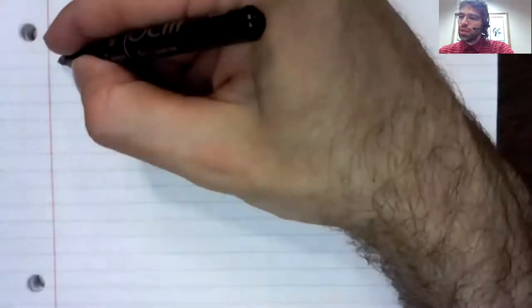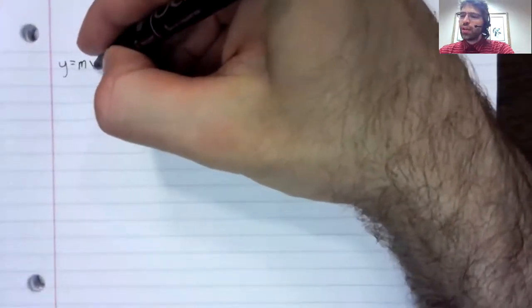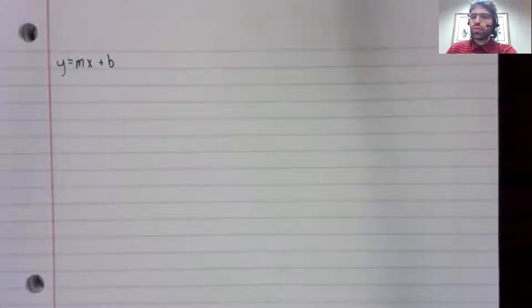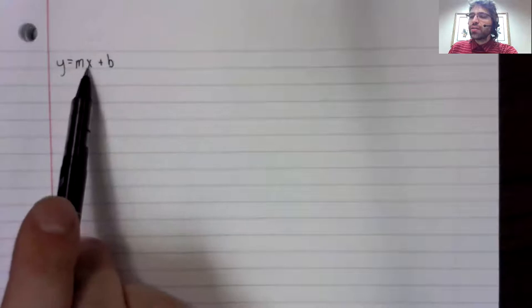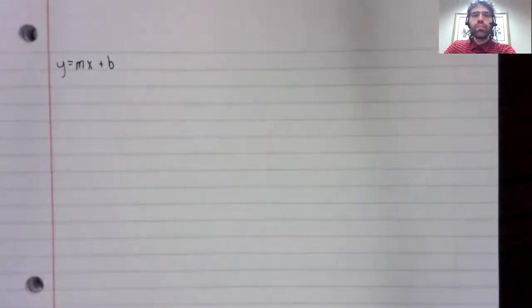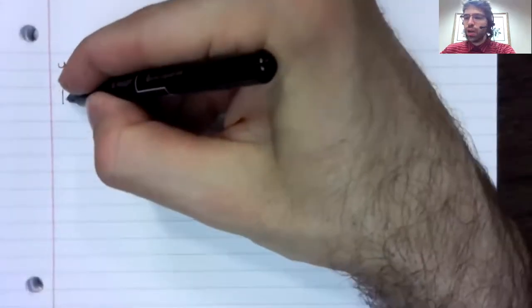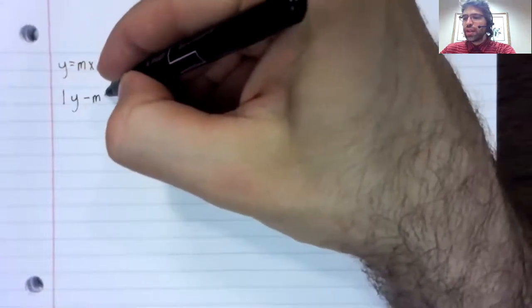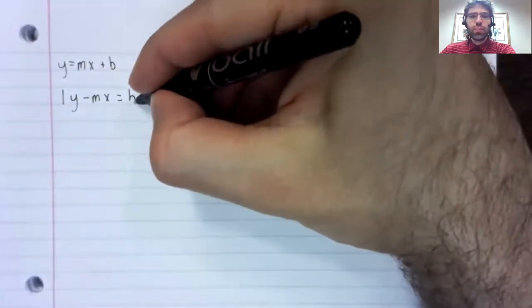You've certainly seen linear equations before in high school algebra: y equals mx plus b. When the equation is written like this, the x and y variables are serving different purposes. The x is the independent variable, the y is the dependent variable. We could rewrite such an equation. Subtract mx from both sides and you have one times y minus m times x equals b.